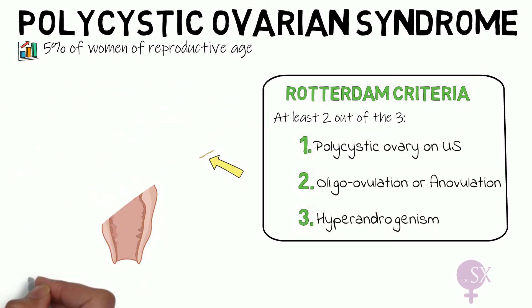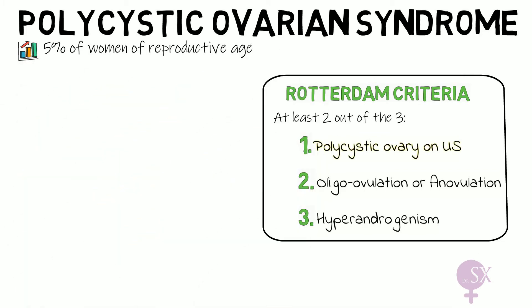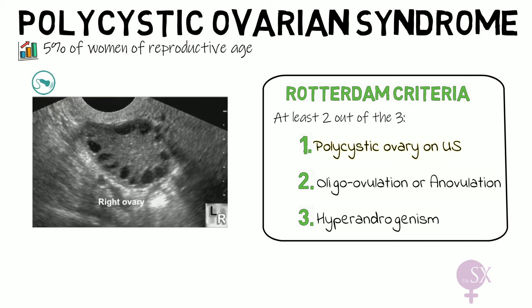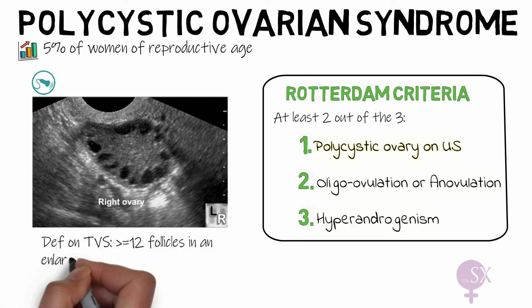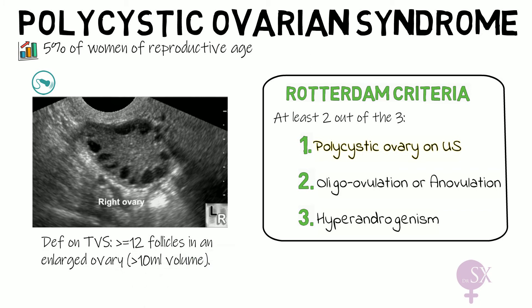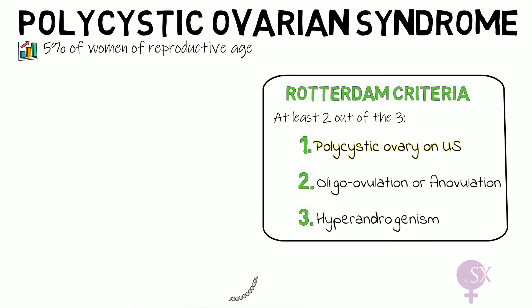Starting with polycystic ovaries on ultrasound — it is best to perform a transvaginal ultrasound to look at the ovaries. The definition for a polycystic ovary is 12 or more small follicles in an enlarged ovary. Keep in mind that there are actually multiple follicles and not cysts. These follicles characteristically lie at the periphery of the ovary, just like a pearl necklace, and hence referred to as a 'string of pearls' appearance.